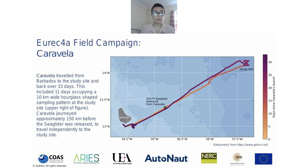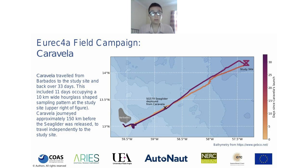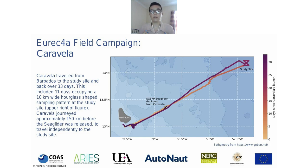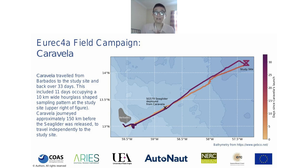We deployed the surface vehicle from Barbados with a Seaglider beneath it, sending it to a 10 by 10 kilometre study site. At the study site, we repeated a bowtie or hourglass shape over 11 days. We also deployed two more Seagliders from the RV Meteor for more comprehensive ocean measurements. The surface vehicle traveled to the site autonomously using the Iridium network, which worked really well. We deployed the Seaglider early to improve transit time since it turned out to travel a bit slower than anticipated.